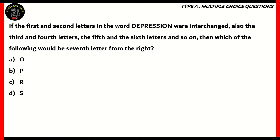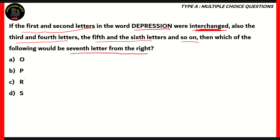Now let's look at the final question for the day. If the first and second letters in the word 'depression' were interchanged, also the third and fourth letters, the fifth and sixth, and so on — then which of the following would be the seventh letter from the right? Options are O, P, R, or S. Technically, this is a question of ranking test, because we're interchanging letters and then finding a letter ranked seventh from the right. The word 'depression' breaks down as D-E-P-R-E-S-S-I-O-N.